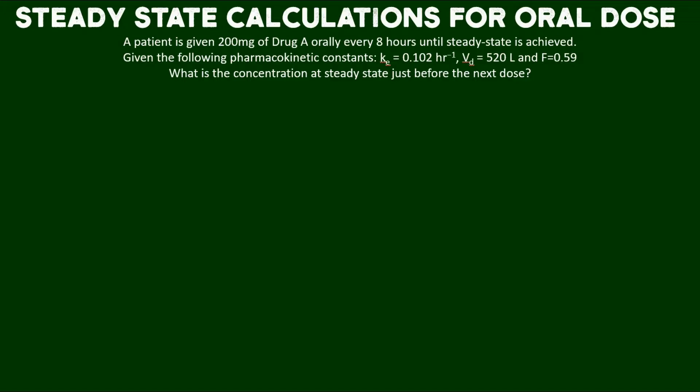Given the following pharmacokinetic constants, including an elimination rate of 0.102 hours to the negative one, a volume of distribution of 520 liters, and F — what is F? F is bioavailability, which is what we need when it's not an IV dose, because bioavailability accounts for absorption. Here, it's equal to 0.59, or 59% bioavailable.